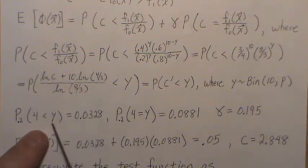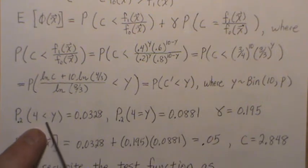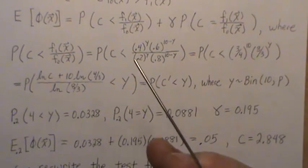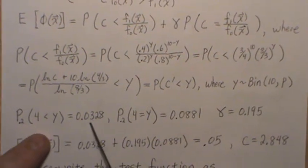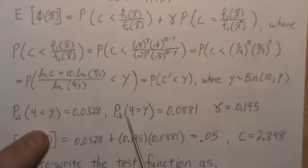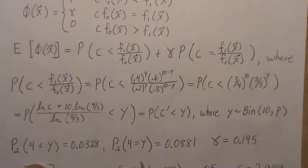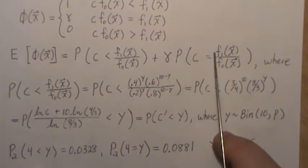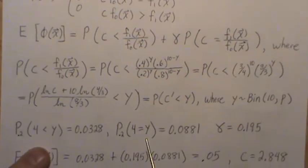And if we went with Y greater than 5, then it becomes too big for alpha, so we can't use it. So this is the first one that we can. But when we say the probability that it's equal to 4, that's 0.088.